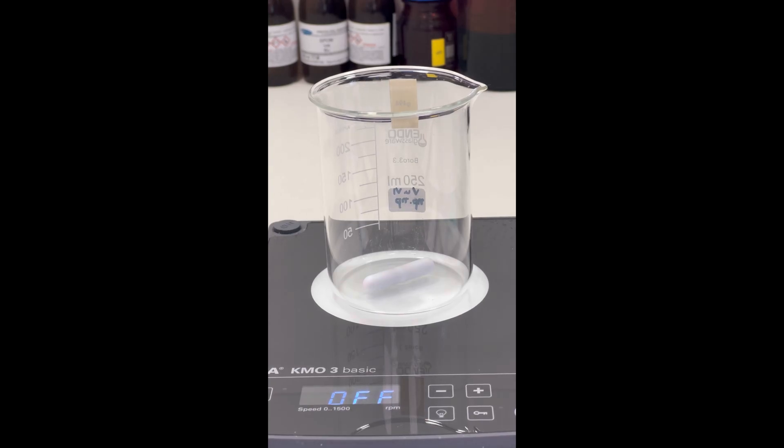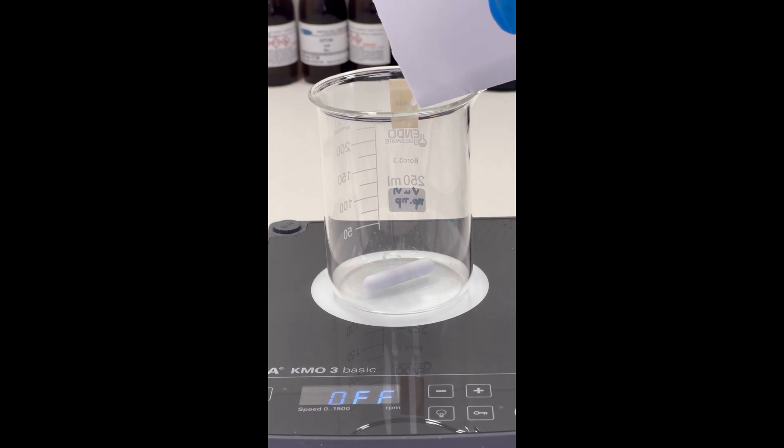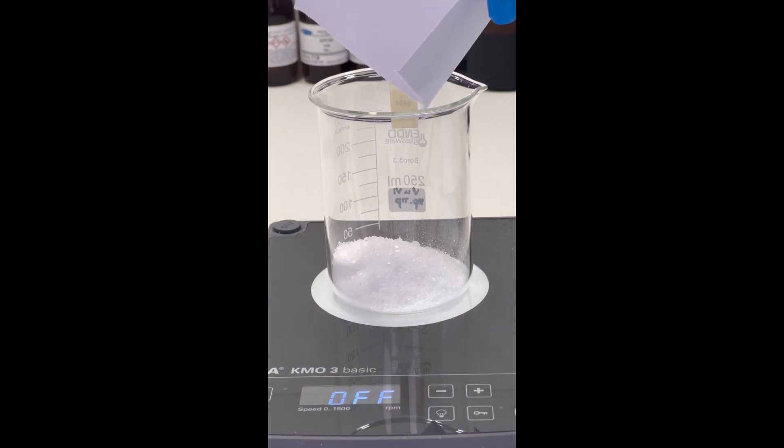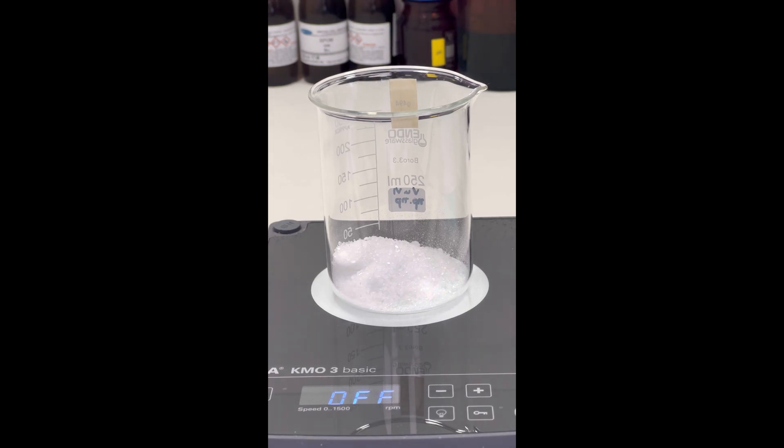To synthesize ferric ammonium citrate, we begin by preparing an ammonium citrate solution. First, we add 20 grams of citric acid to a beaker and pour 50 milliliters of distilled water over it.